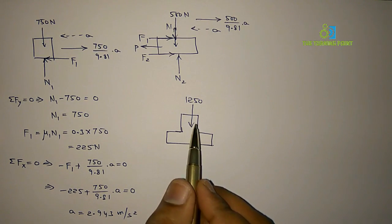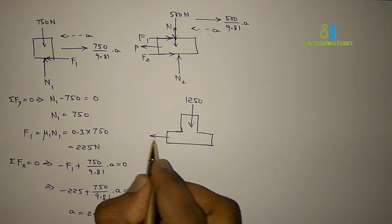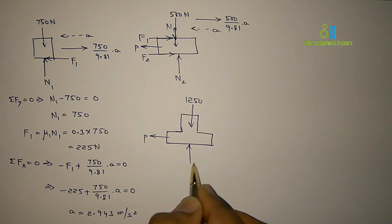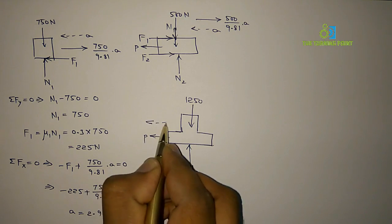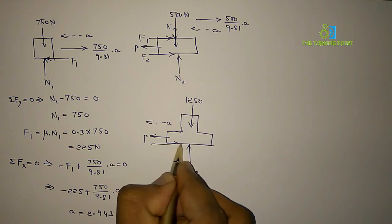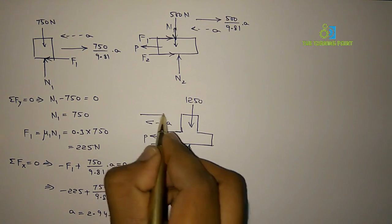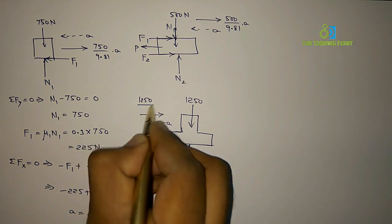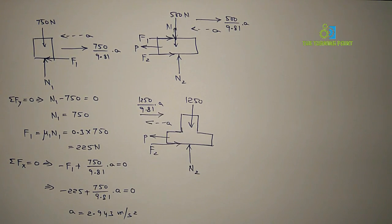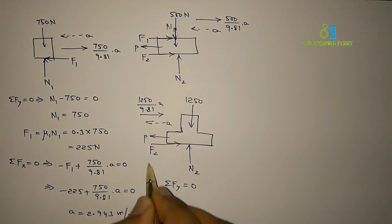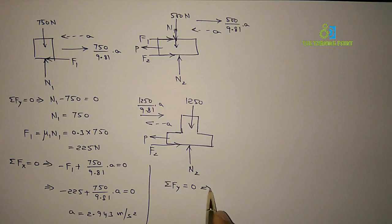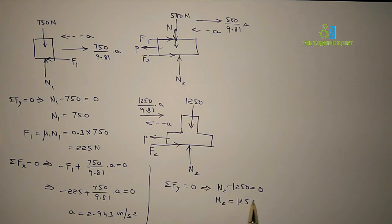That is the total weight of the system, and P is the applied force on the cart. The system is not able to move downward, so N2 acts in the opposite direction. When force P is applied, there is acceleration in the left-hand side direction. In the opposite direction, represent frictional force F2 and the inertia force 1250/9.81 × A. Applying sigma Fy = 0: N2 = 1250N.